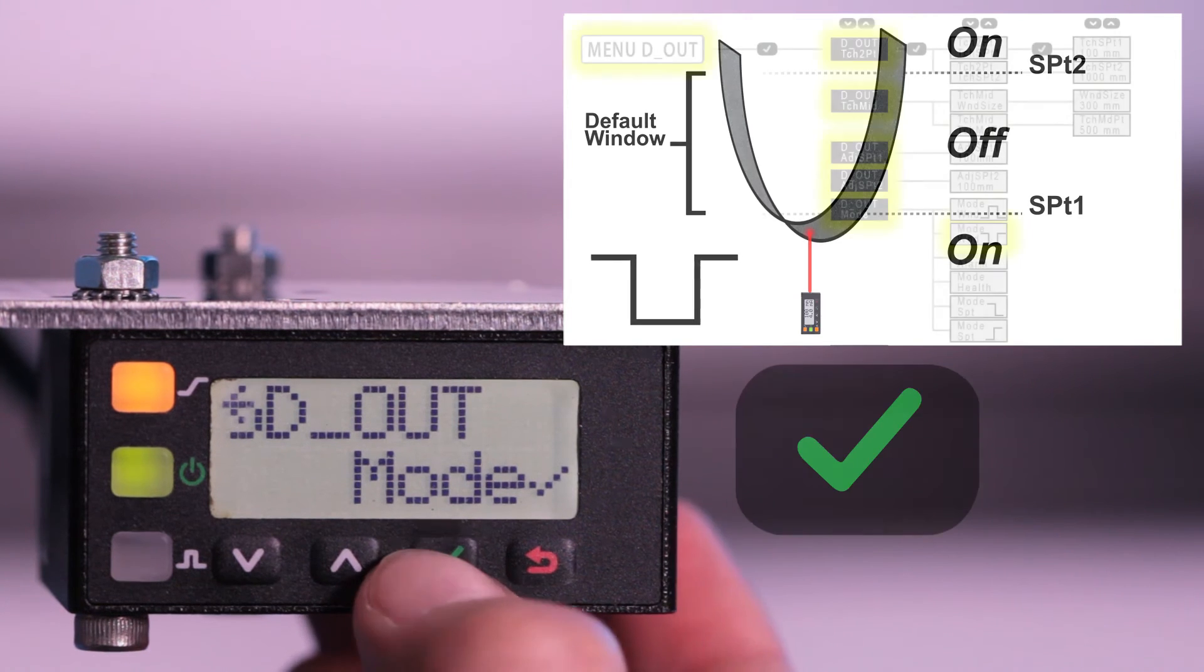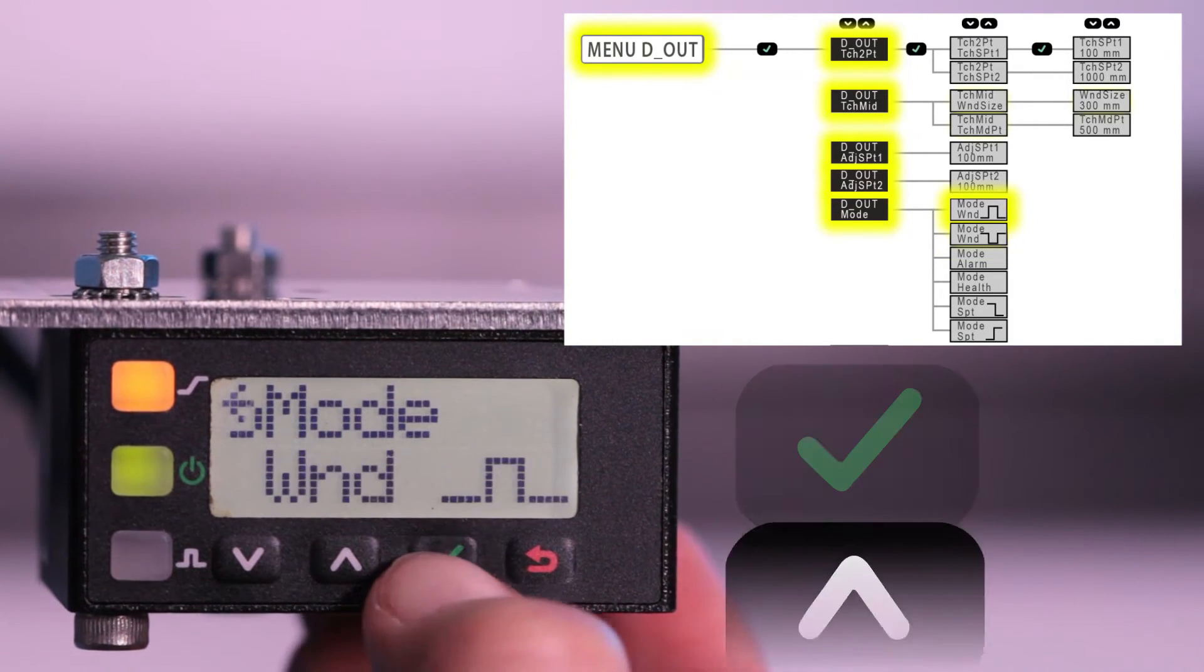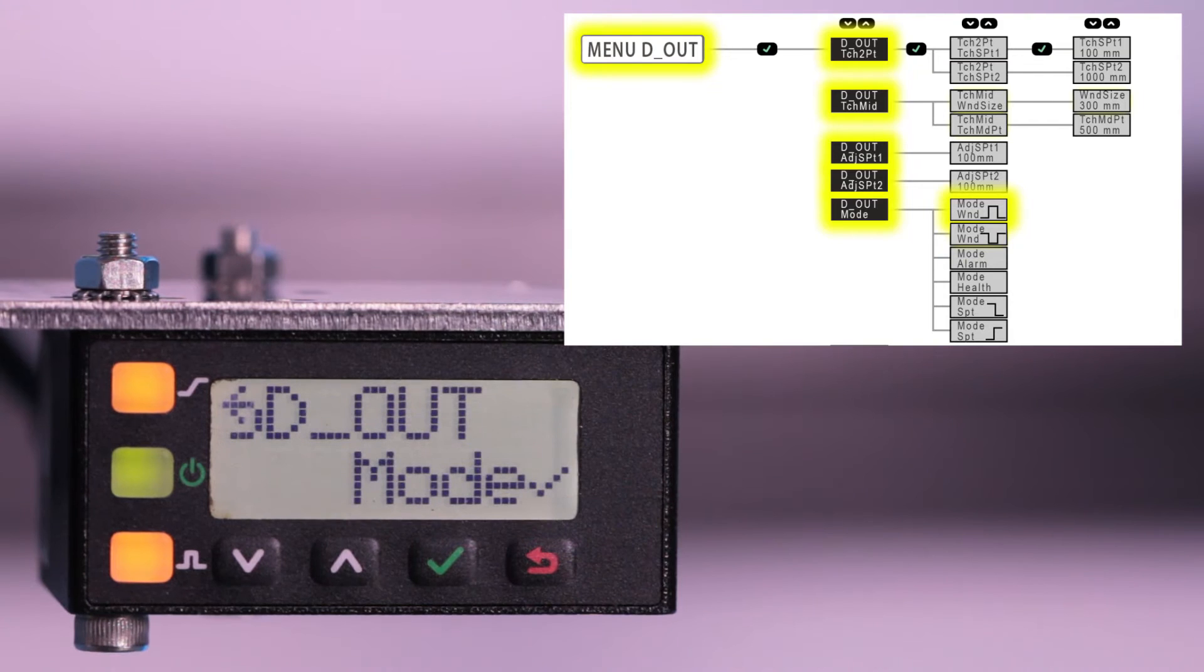In this example, the window will remain normally closed so the output is on when a target is located between the two switch points.